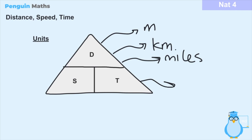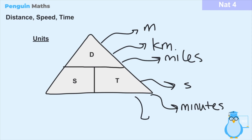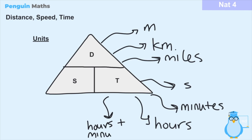Moving on to time — time also has a number of measurements. The smallest we typically use in distance-speed-time problems are seconds, written as s. We may also have minutes or hours, or we may be given a time as a combination — for example, one hour and 15 minutes — meaning we have both hours and minutes in our problem.